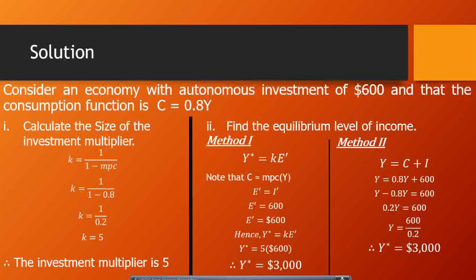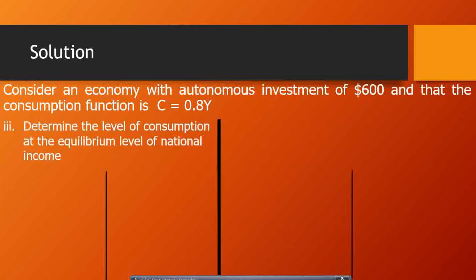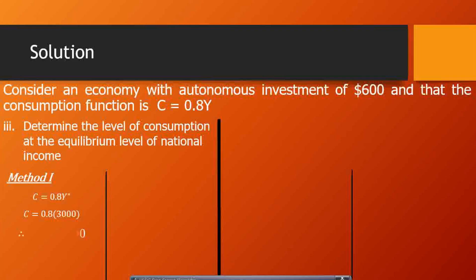We want to determine consumption at the equilibrium level of national income. Method 1: substitute Y* = $3,000 into the consumption function C = 0.8Y. So C = 0.8 times $3,000 = $2,400. Therefore, consumption at the equilibrium level of national income is $2,400.